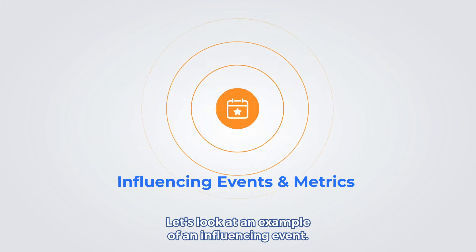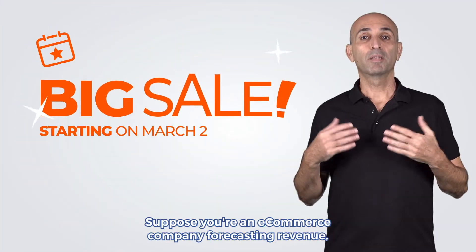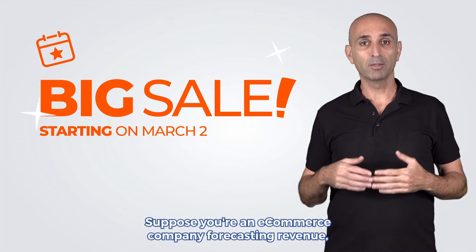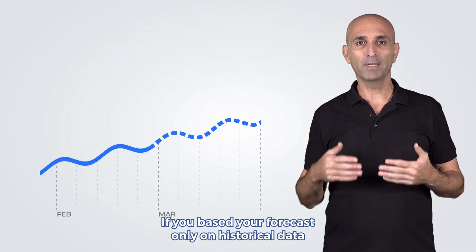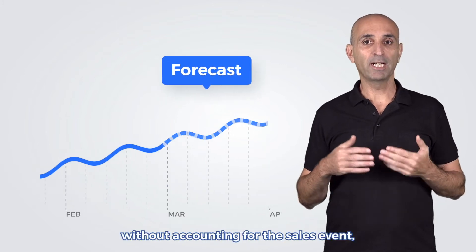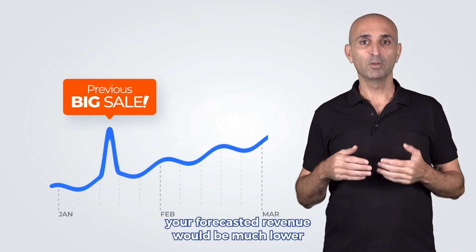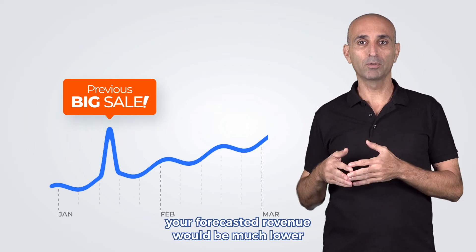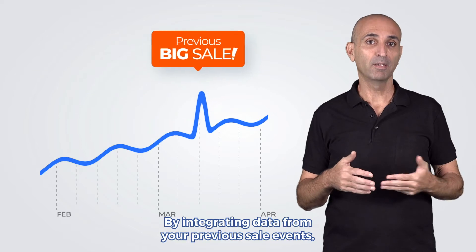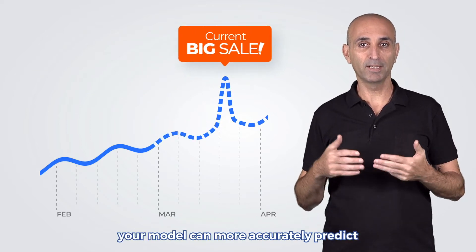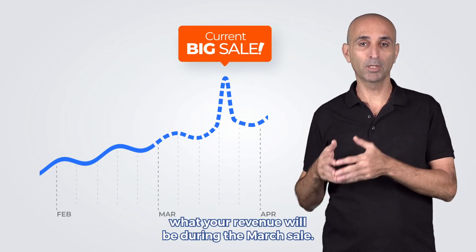Let's look at an example of an influencing event. Suppose you're an e-commerce company forecasting revenue and you plan on having a big sale on March 2nd. If you based your forecast only on historical data without accounting for the sales event, your forecasted revenue would be much lower than your actual sales. By integrating data from your previous sell events, your model can more accurately predict what your revenue will be during the March sale.